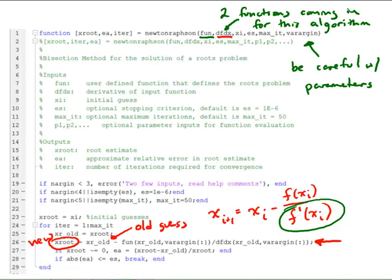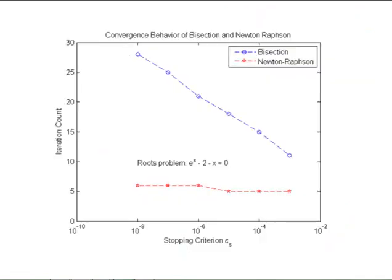Let's look at how this performs relative to the bisection method. We looked at this in a previous video. That's the blue line for the bisection method, and that's the convergence behavior as we decrease the stopping criterion for the roots problem e to the x minus 2 minus x equals 0.